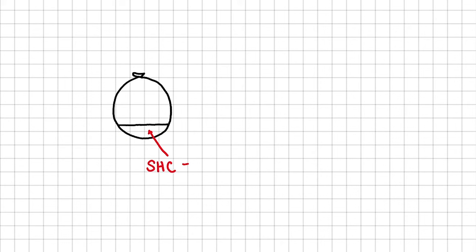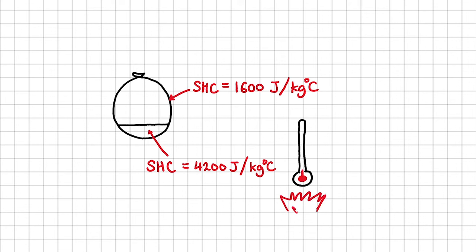Water has a specific heat capacity of 4,200 joules per kilogram degree Celsius, whereas rubber's is 1,600 joules per kilogram degree Celsius. Water's large specific heat capacity means that it requires a large amount of heat to raise its temperature.